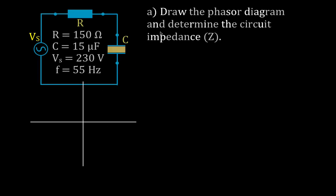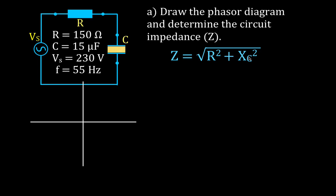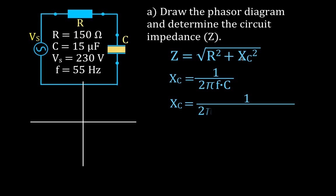Let's start with the information we were given. First, I'm going to draw the phasor diagram and determine the circuit impedance. To do that we need the capacitive reactance, which is calculated as 1 over 2π times F times C. Plugging in the values: 1 over 2π times 55 Hz times 15 times 10 to the minus 6 farads — since microfarads means 10 to the minus 6.